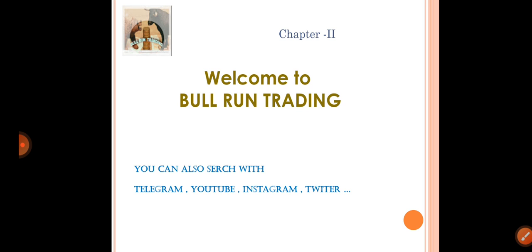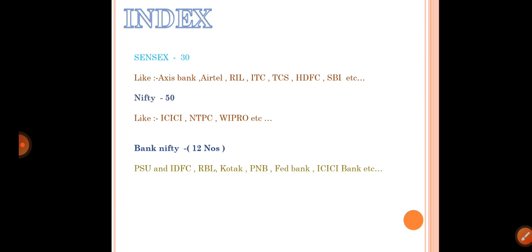We will start with the fundamentals and basics for beginner traders. First, we will cover the index. Index consists of Sensex, Nifty, and Bank Nifty. Sensex has 30 stocks like Axis Bank, Airtel, Reliance, ITC, Indian Tobacco, TCS, Tata Communications, HDFC, SBI, etc. — 30 members in total.